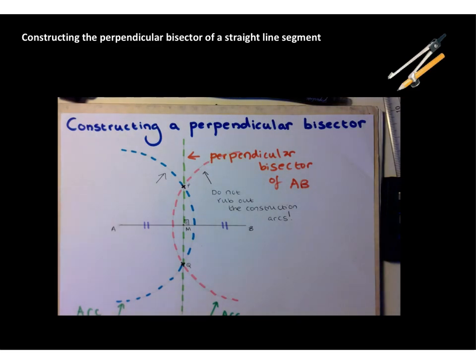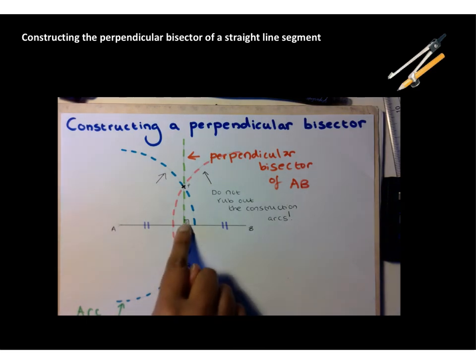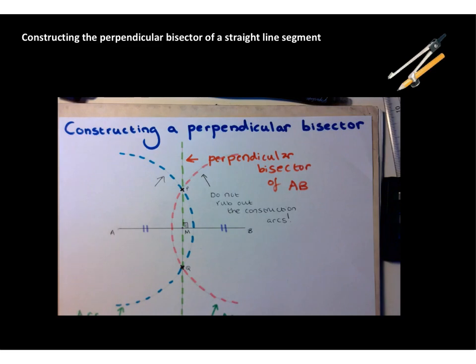The other thing that people quite often ask is, why do we need to do this? Why could we not just measure it with a ruler? Well, the truth is, you're actually going to get a much more accurate placement of this midpoint M if you do this with an accurate construction using compasses and a straight edge. If you just measure it with a ruler, it's not good enough. It's just not accurate enough because you could be slightly out.